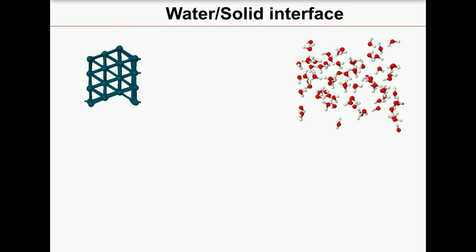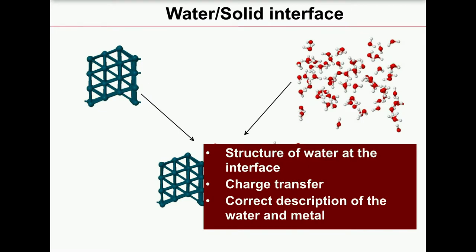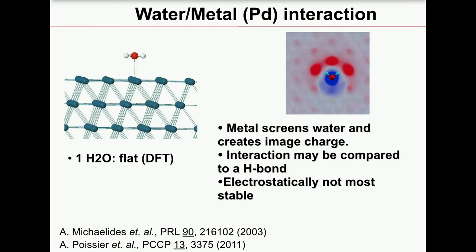What we aim to simulate is some sort of interface with water and a solid — in this case a metal — and we need to have a very accurate representation of both systems. We need to bring them in contact, and the questions we want to answer are: what is the structure of all the molecules at the interface, whether charge transfer occurs between the two systems, and whether that is modified by applying a voltage. We start from the simplest system: one single water molecule at the surface of the metal.